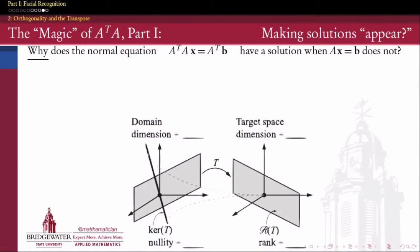So first of all, let's think about why the normal equation has a solution even though Ax equals B might not. And more generally, we want to think about under what circumstances does the normal equation have a solution.